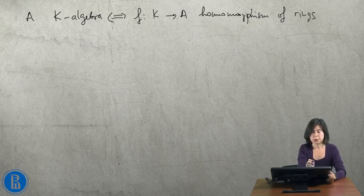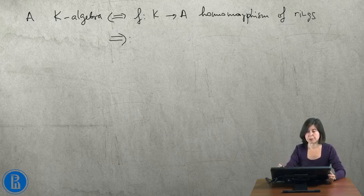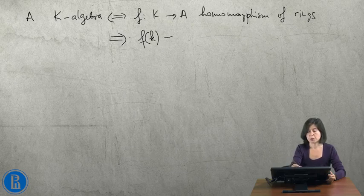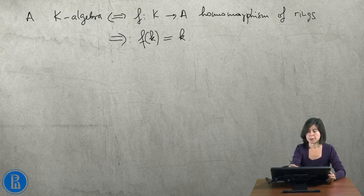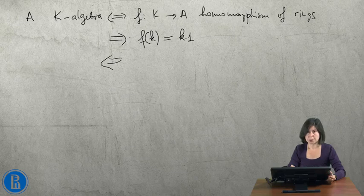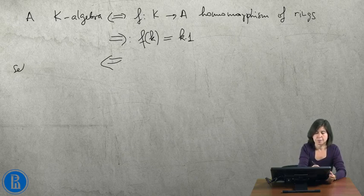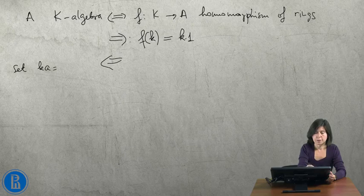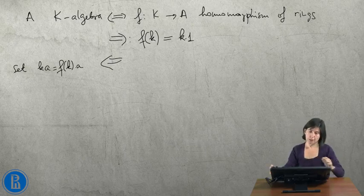Well, indeed, if I have a K-algebra, then I can define a homomorphism by sending K to K as it acts on 1. And conversely, if I have a homomorphism of rings from K to A, I can define a K-algebra structure by setting KA equal to F of K times A.